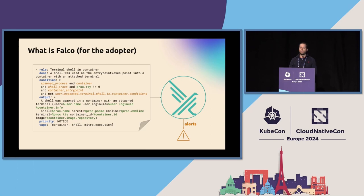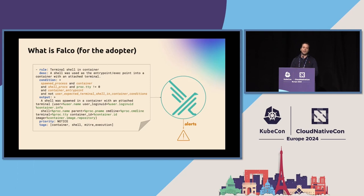So if you have never used Falco, what does it look like? It's a magic box. You put some rules inside that magic box — exactly what you want to be alerted about. For example, here we have a rule for a terminal shell in a container. You can download our pre-made rules if you don't want to write your own, put them in the magic box, and get alerts whenever these things happen.